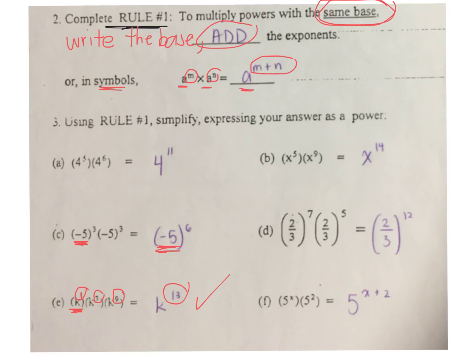For the last one, some of you were confused. This is just in symbols — if you don't know the exponent, use the symbol. The base is 5, and the exponents would be whatever X is, plus 2. Just in symbols.